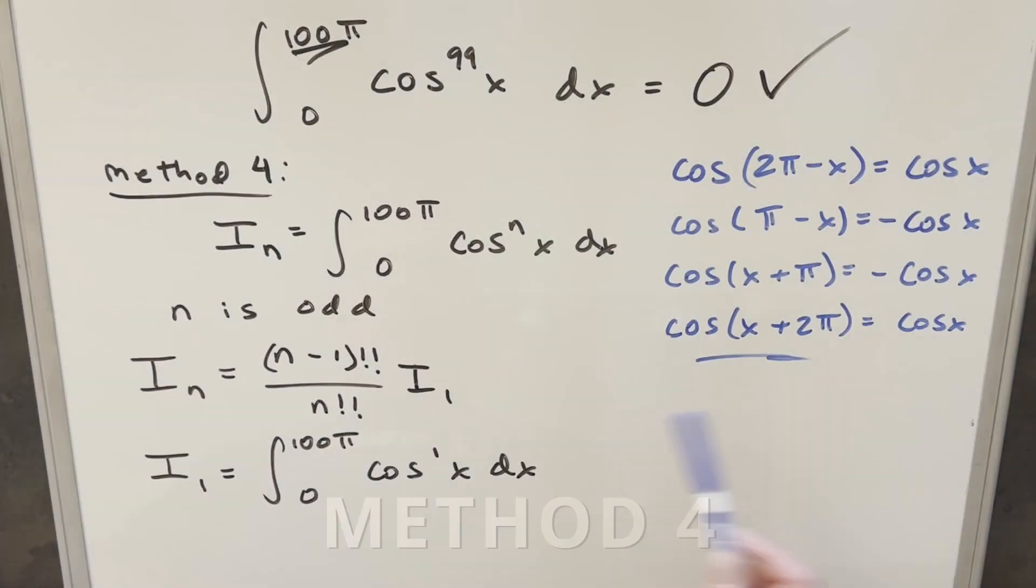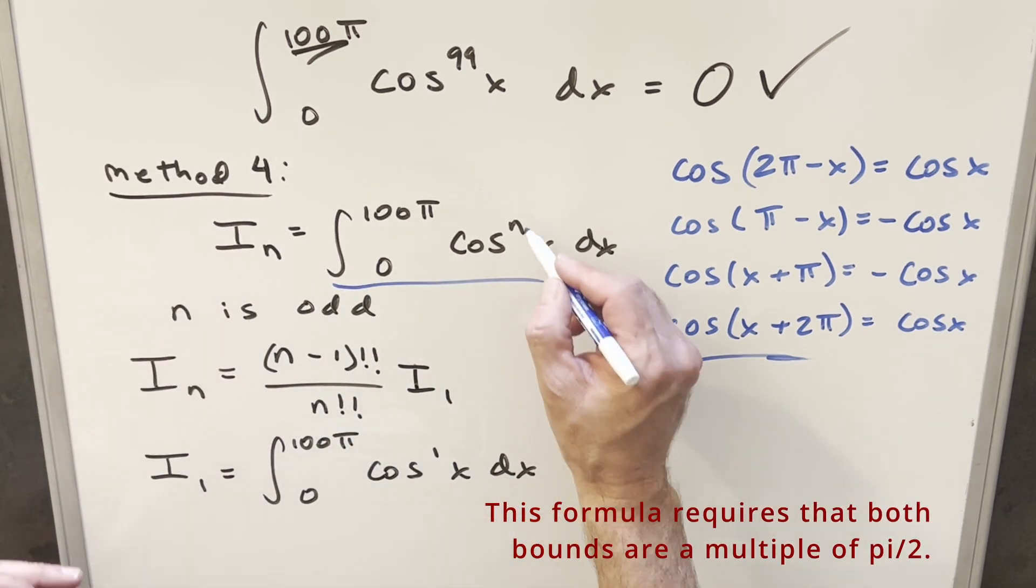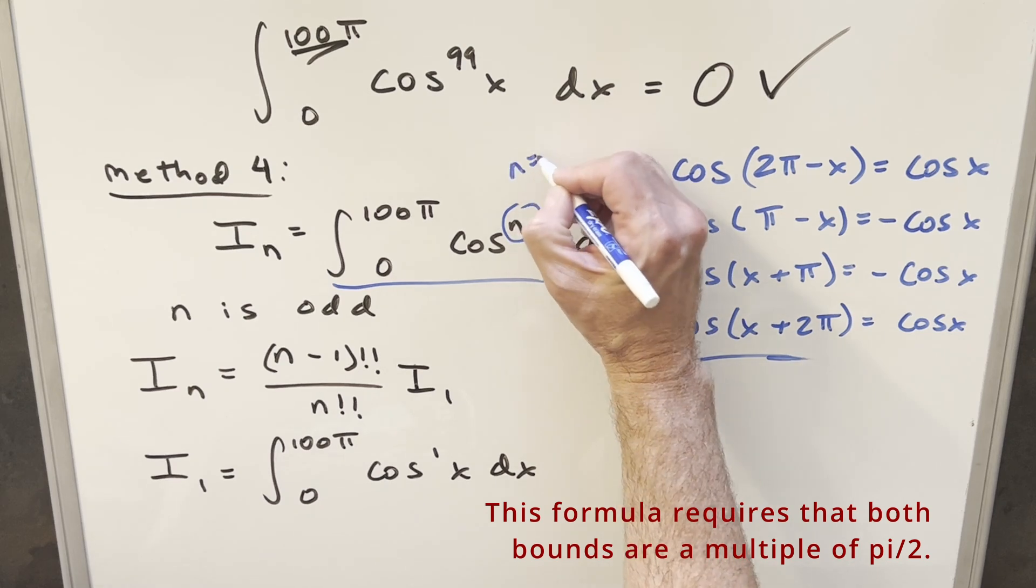Now for method 4, we don't need any of the formulas we used in the previous ones over here. We're going to use our power reduction formula that we have right here. We write our integral as i sub n, where n is going to be, in our case, n is going to be 99.